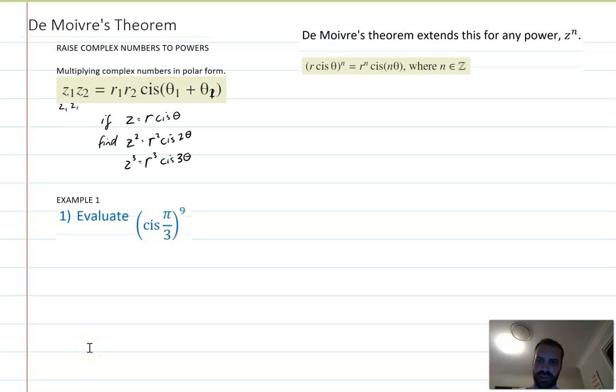First one, evaluate (cis π/3)^9. We can think of that as 1 cis π/3 to the power of 9. So what's that going to be? That's going to be equal to 1, the modulus to the power of 9, cis 9 times π/3. Obviously, 1 to the power of 9 is 1 and cis 9π/3 is the same as 3π.